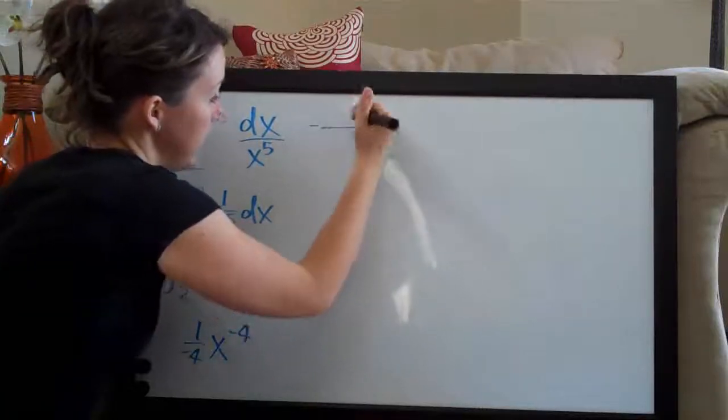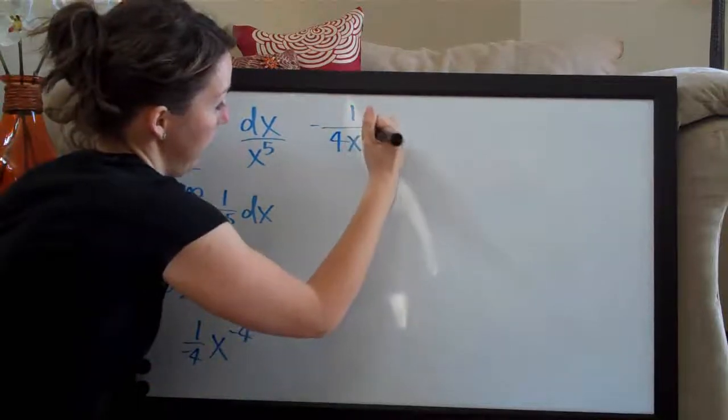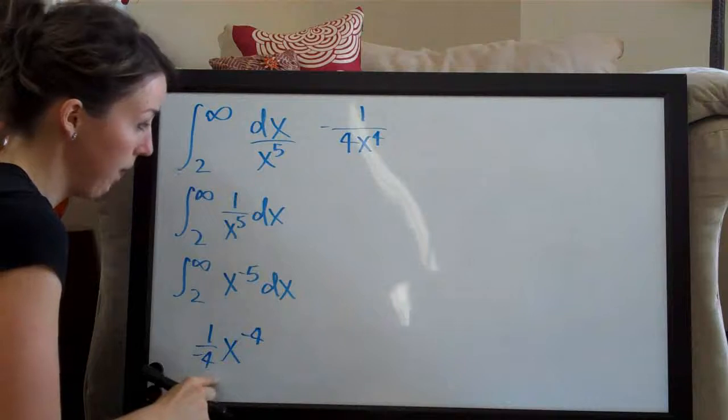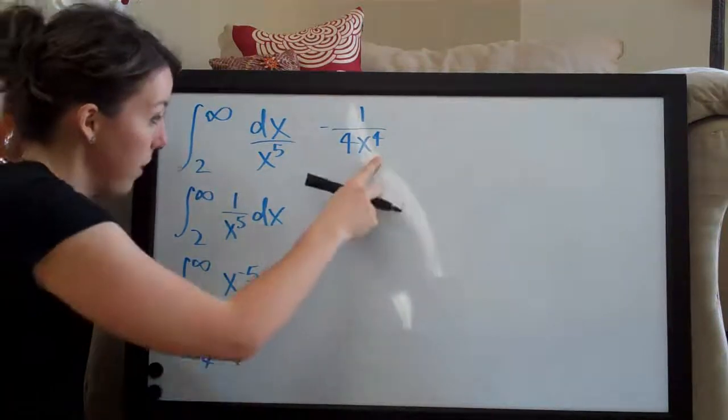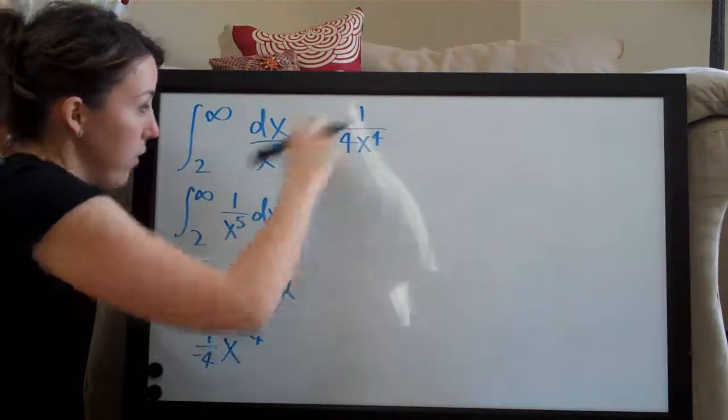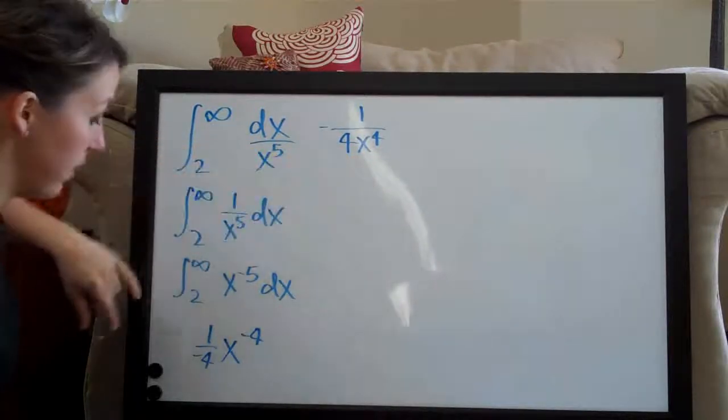So our integral actually looks like negative one-fourth... oh sorry, I gotta give myself more room. So we've got negative one over four x to the fourth. So you see we just moved the x to the fourth down to the bottom and this exponent went from a negative four to a positive four. We've got our negative out in front and our one-fourth coefficient here.